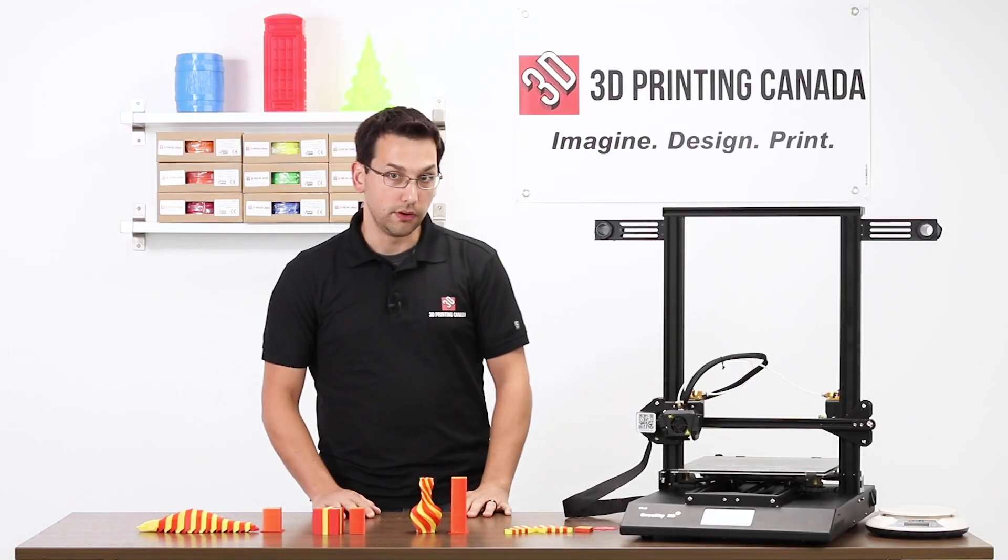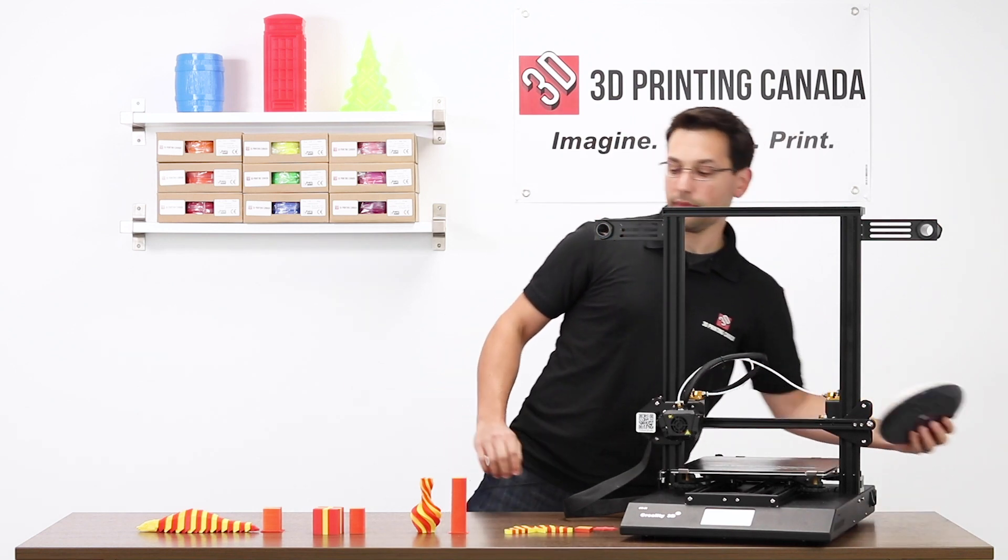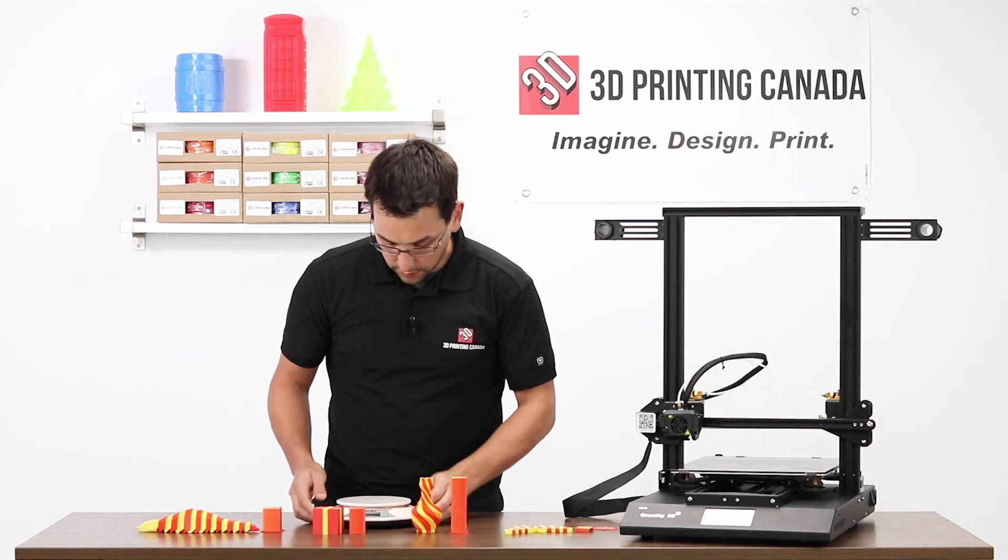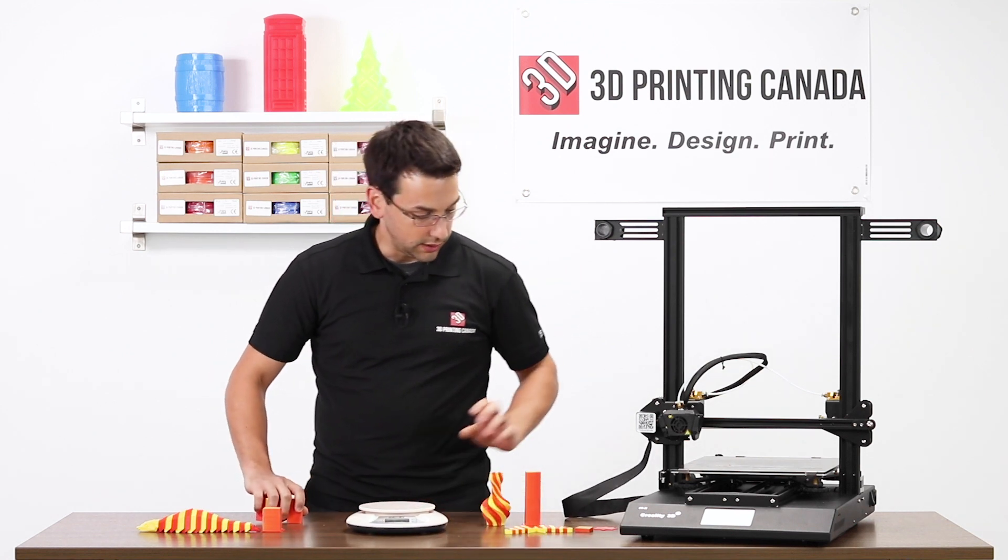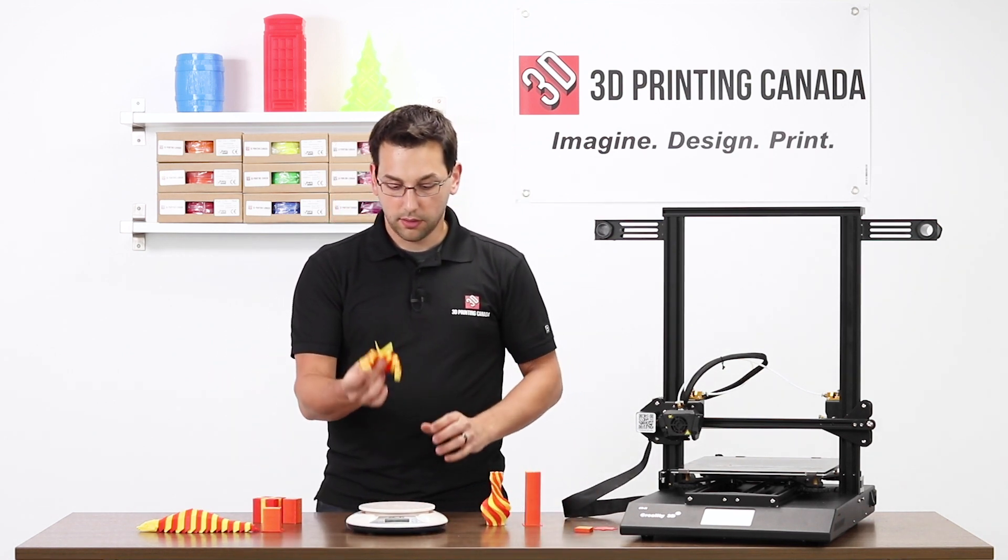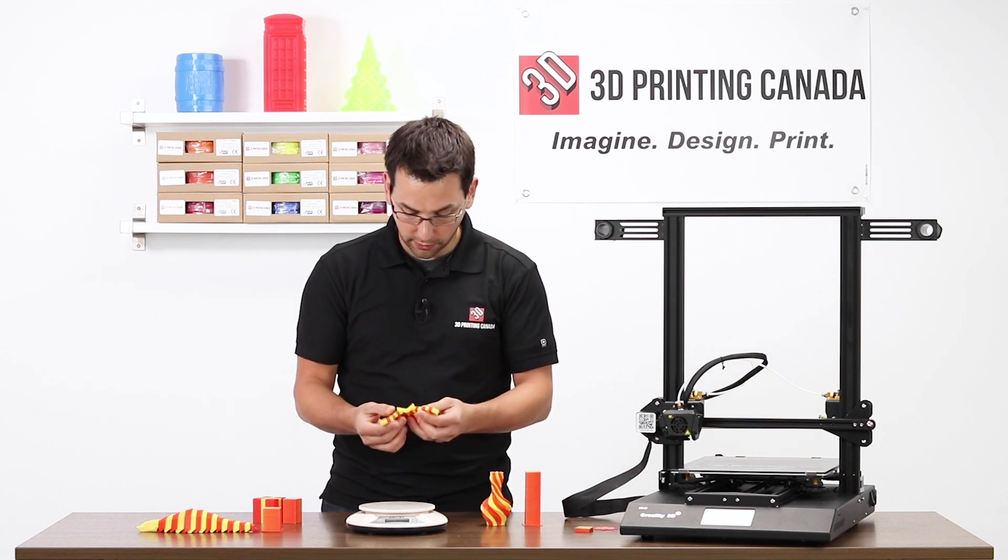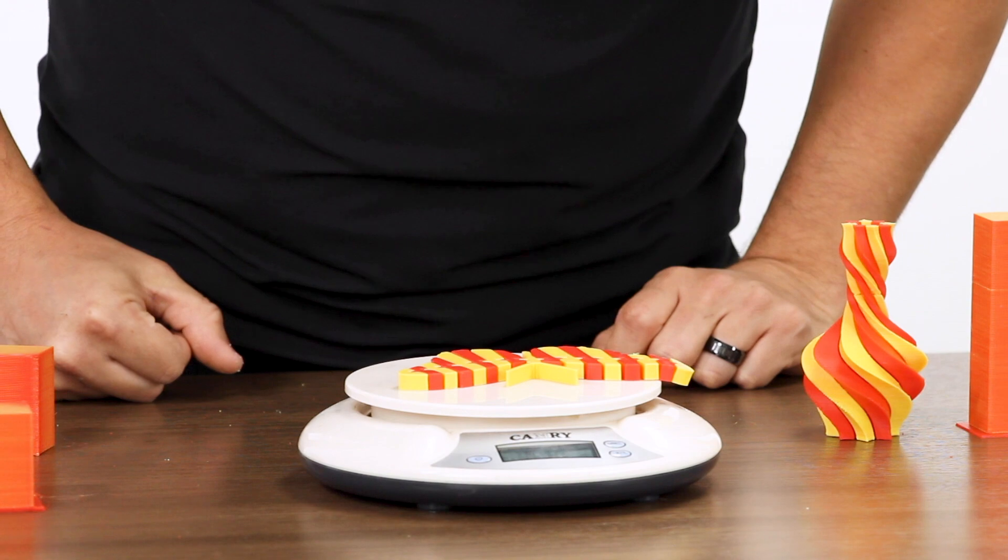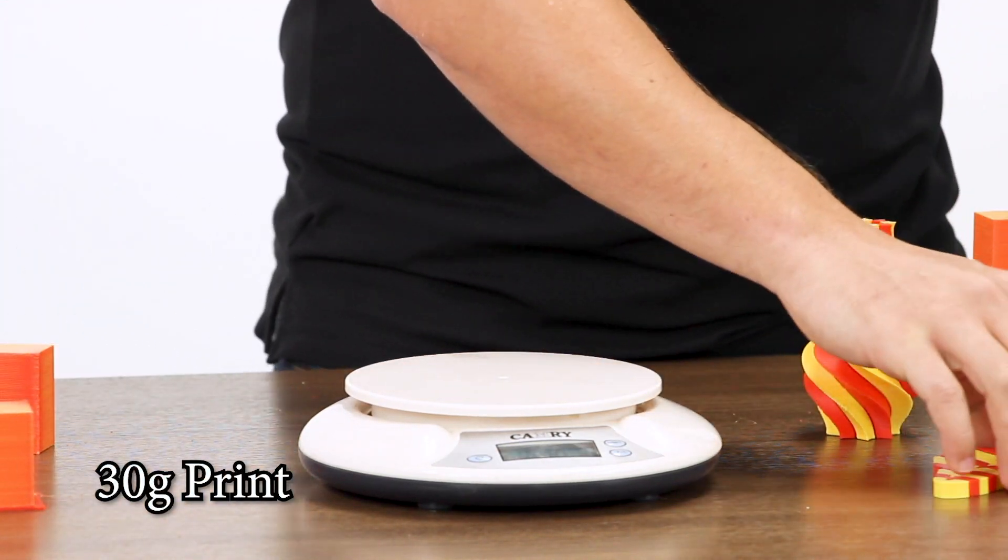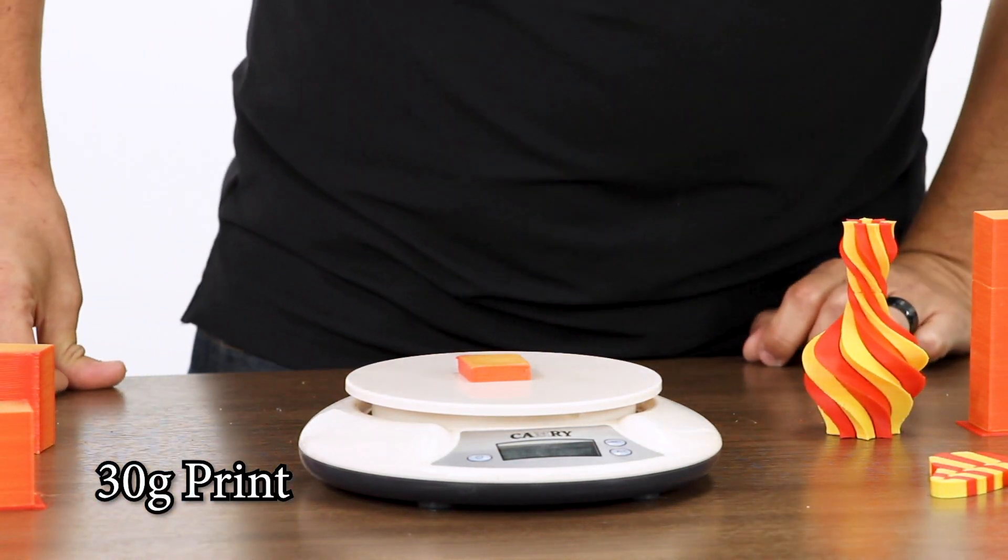So without further ado, let's grab the scale and let's see how much each of these weighed. So the butterfly, which is probably the best print by far out of these, is 30 grams. And his little purge block here is 8.